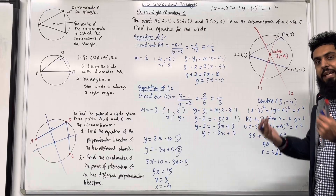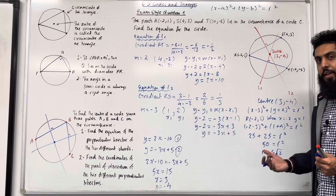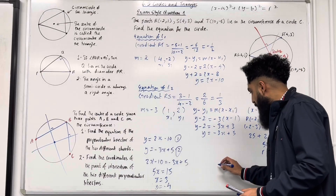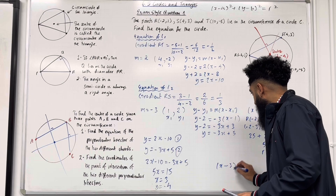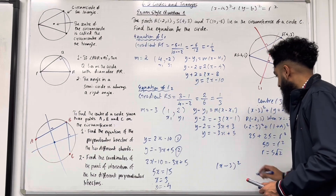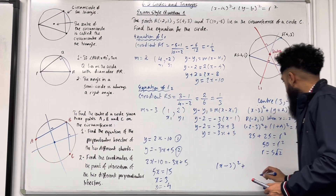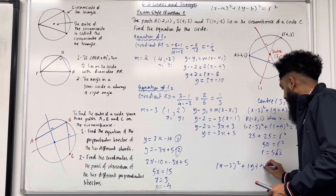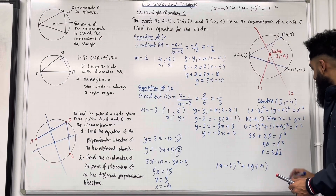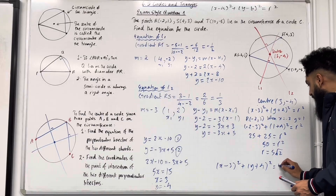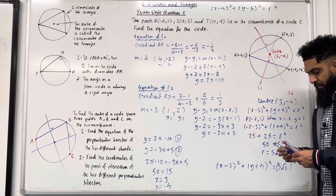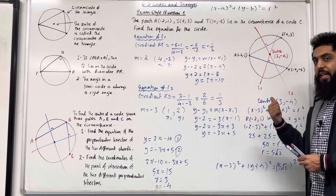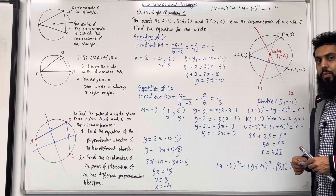Now I can write the complete equation of the circle. The complete equation of the circle is (x − 3)² + (y + 4)² = (5√2)². That completes exam-style question 1.